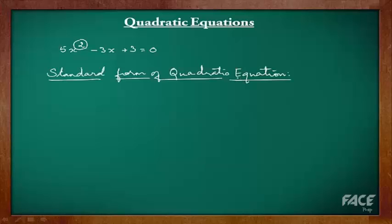The standard form of a quadratic equation looks like this: ax² + bx + c = 0. Here, a, b and c are known values and are real numbers, and a cannot be equal to 0. x is the variable or unknown.